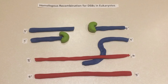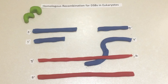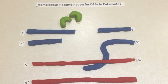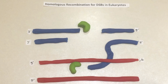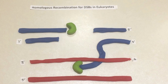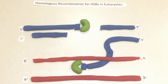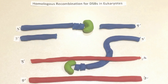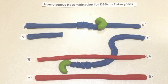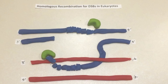The Holliday junction in homologous recombination leads to a symmetric arrangement of sequences around the central junction. This allows a branch migration process to occur while the strands are moved through the junction point.